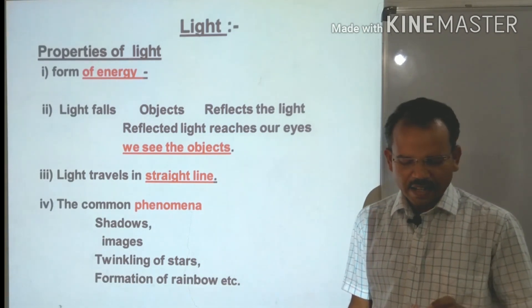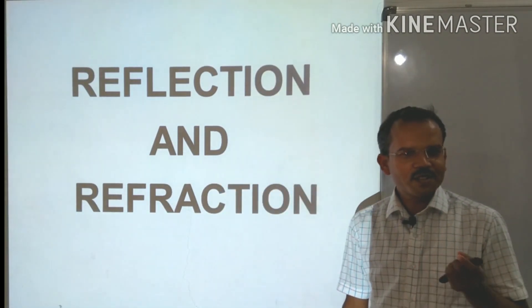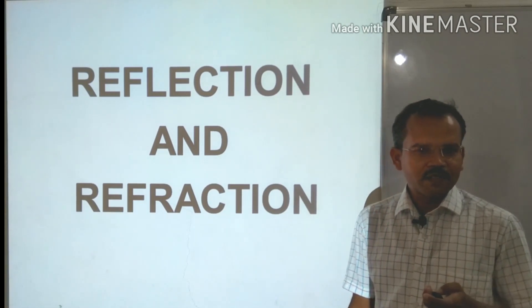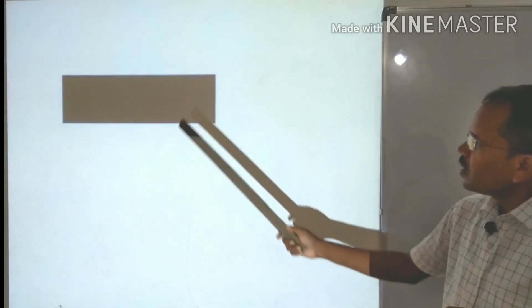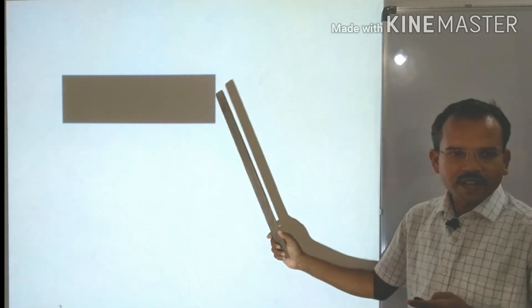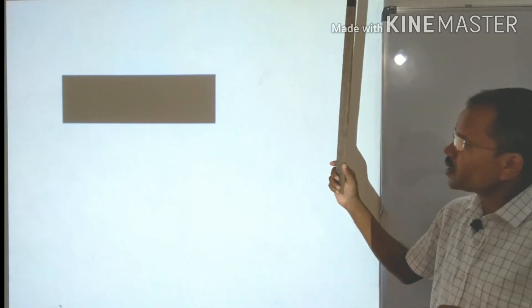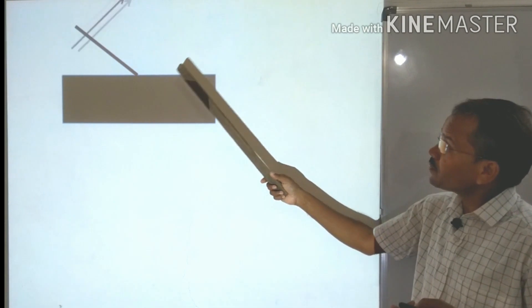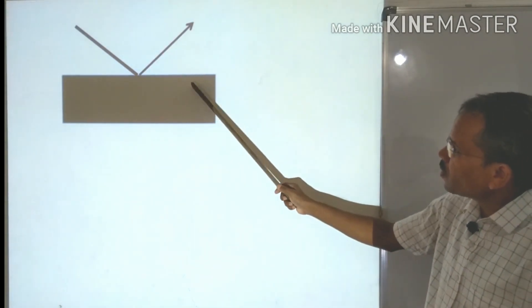Now look at reflection and refraction. Are you aware of the difference between reflection and refraction? I hope you have learned this at the primary level. Still, let us try to understand with the help of a diagram. For reflection, consider this reflecting surface as an opaque medium and this as the air medium. The incident ray enters from air, then the reflected ray gets reflected back from the opaque surface into the air medium itself.